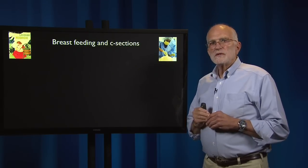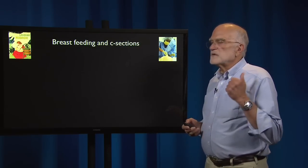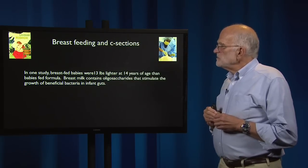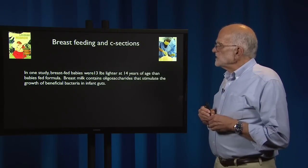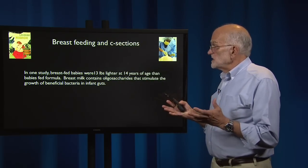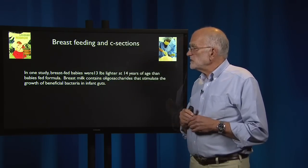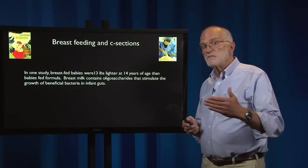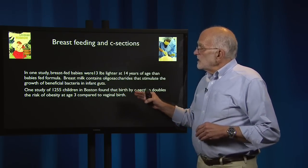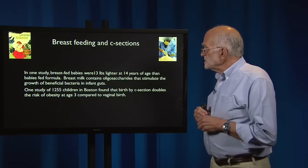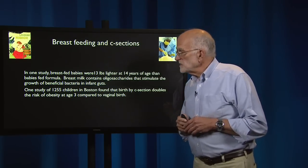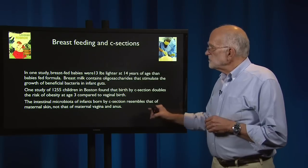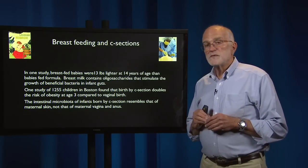There are two other important cultural innovations. One is that there is less breastfeeding, and the second is that there are more c-sections. One study found that breastfed babies were 13 pounds lighter at 14 years of age than babies fed formula. Breast milk contains oligosaccharides that stimulate the growth of beneficial bacteria in infant guts, and some of this effect may be mediated by the establishment of a gut flora that influences energy uptake. A study of 1,255 children in Boston found that birth by c-section doubles the risk of obesity at age three compared to vaginal birth, because the intestinal microbiota of infants born by c-section resembles that of maternal skin, not that of maternal vagina and anus.